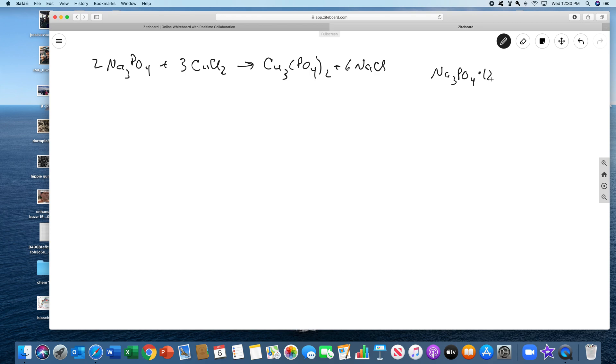The way it's written is how you name it. Usually you name the compound sodium phosphate prefix hydrate with a dot. This would be sodium phosphate dodecahydrate, molar mass is 380 grams per mole.